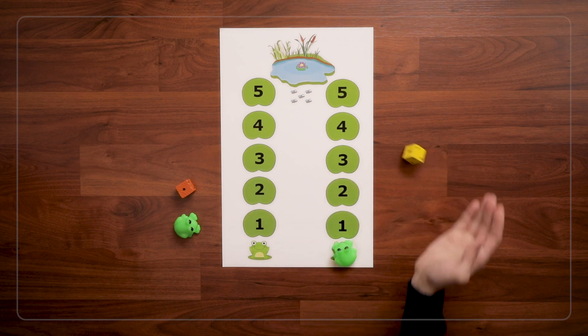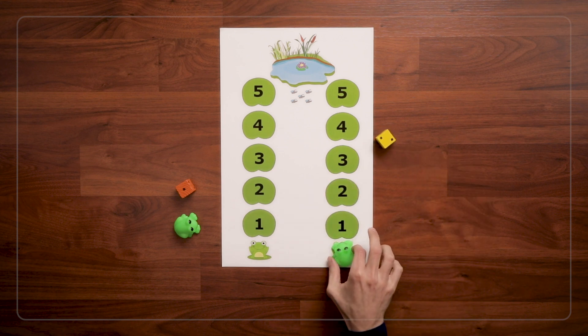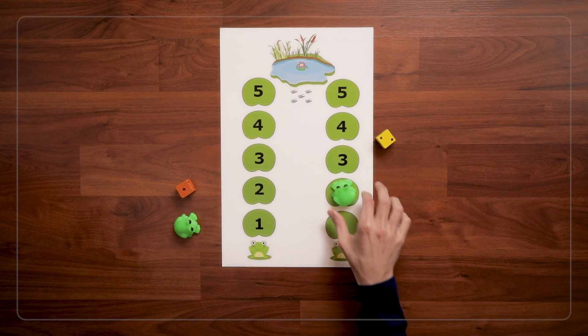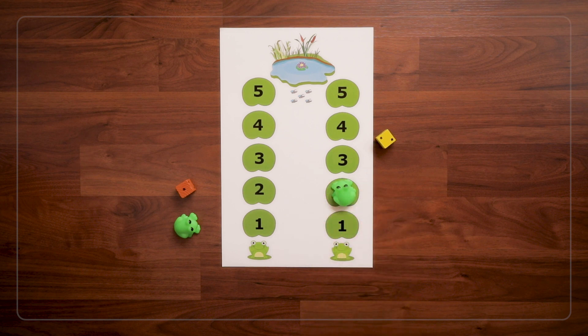So, I roll, and I get a 2. And I'm starting at home, and I'm going to jump 1, 2. And I'm going to count my jumps out loud.